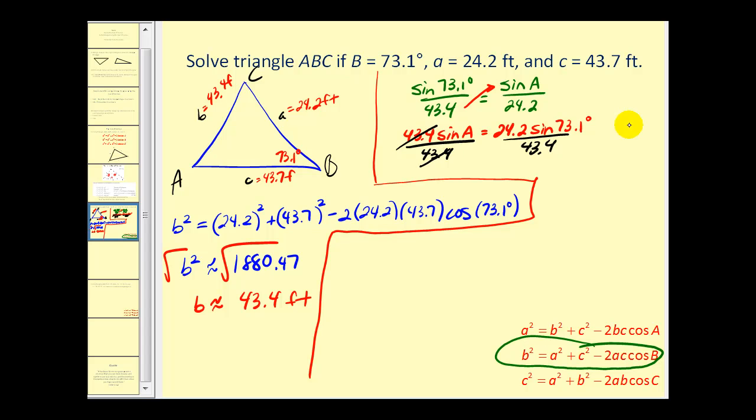We'll divide both sides by 43.4. On the left side we'll have sine A, which is approximately equal to this quotient, approximately 0.5335. Now we can take the inverse sine of both sides, and A is approximately equal to the inverse sine of 0.5335. So angle A is approximately equal to 32.2 degrees.